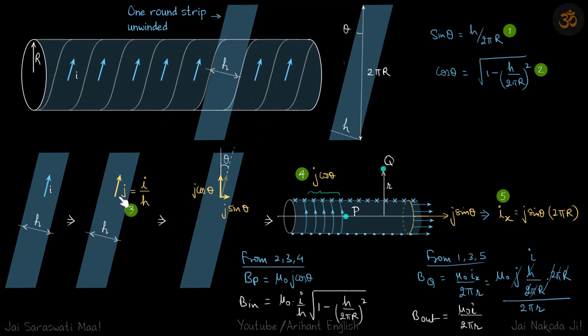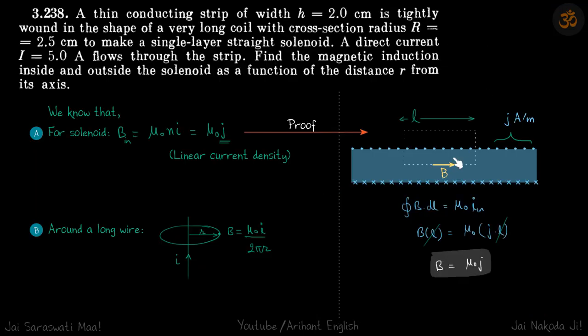We are given j in this direction at an angle which we derived. j at this angle can be broken into two components, j vertically and j horizontally. Vertical component is j cos θ and horizontal component is j sin θ. This situation is now similar to a normal solenoid, tightly wound normal solenoid.